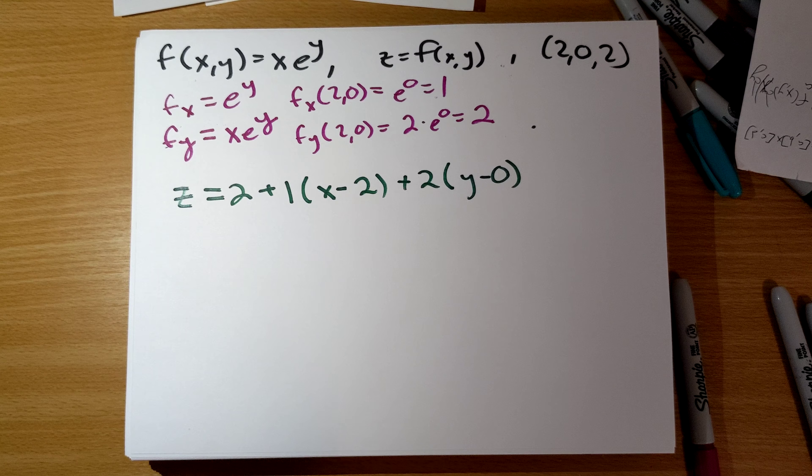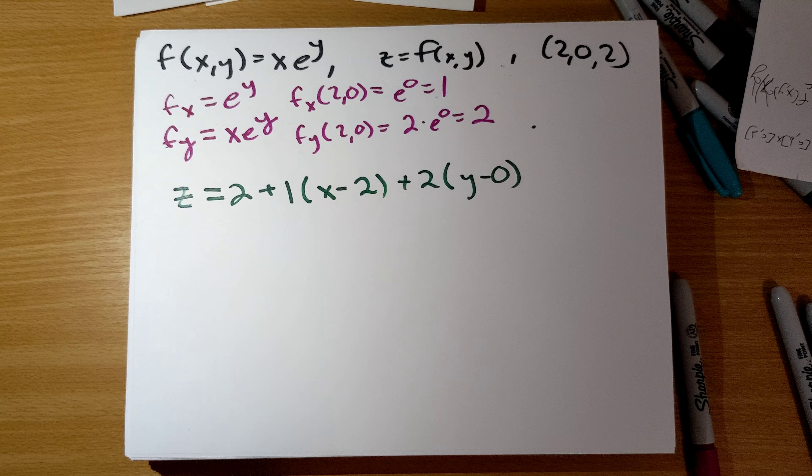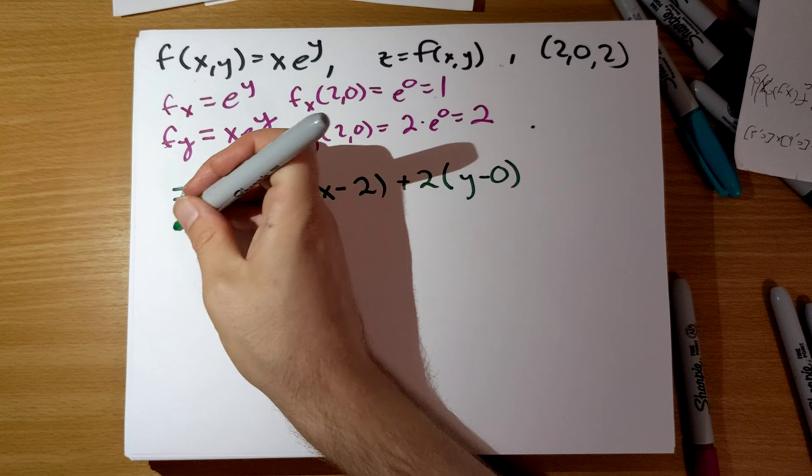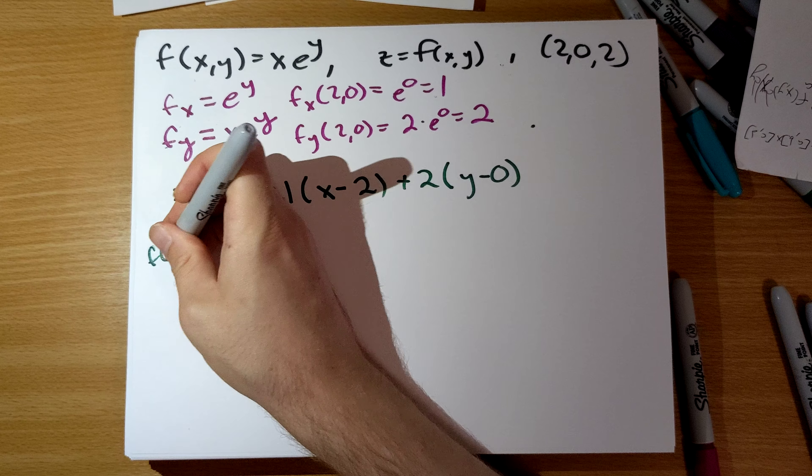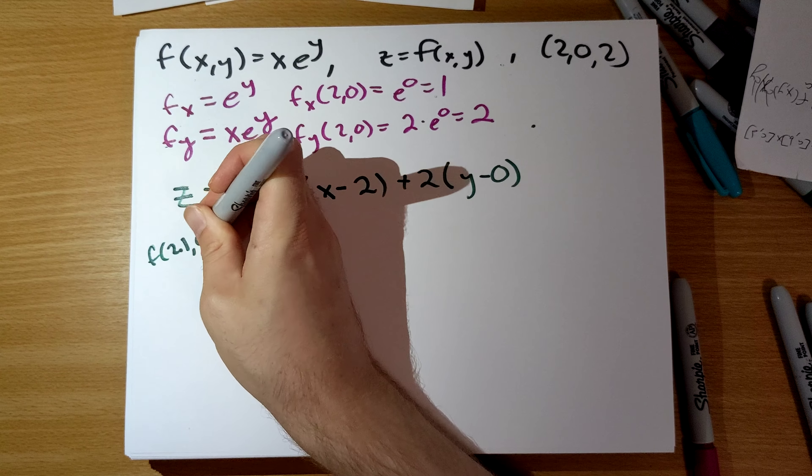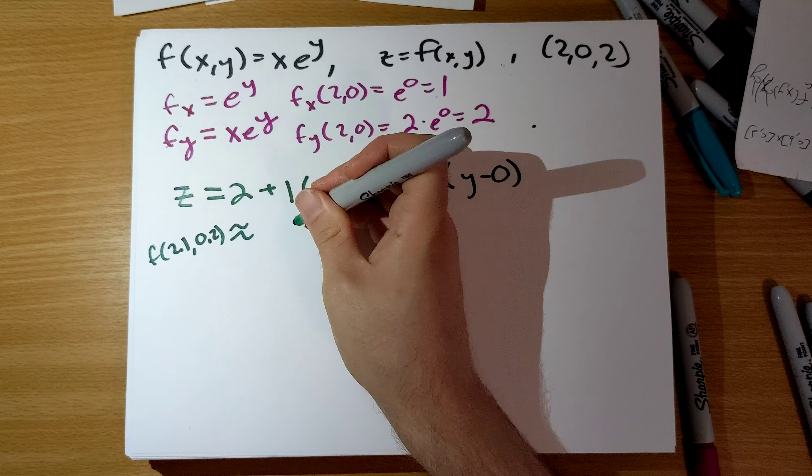Problem number 40. Suppose f of x, y is x e to the y, and z is f of x, y. What are we trying to do? Find equation of the tangent plane to the surface at the point (2,0,2).